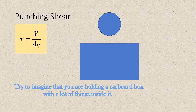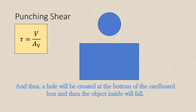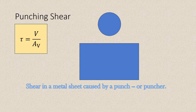To understand punching shear, try to imagine that you're holding a cardboard box with a lot of things inside it. If you will not support the cardboard box at the base, then it will have the tendency to fail by shearing around the point of contact — a hole will be created at the bottom and the objects inside will fall. That's the basic definition of punching shear. In mechanics, examples of this stress usually involve shear in a metal sheet produced by a punch, or simply a puncher.